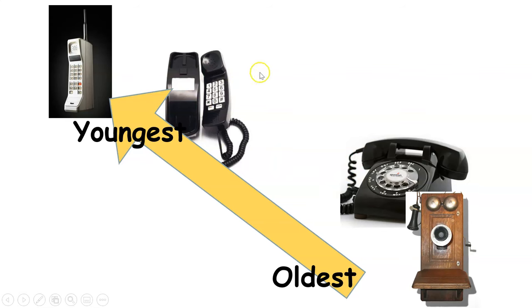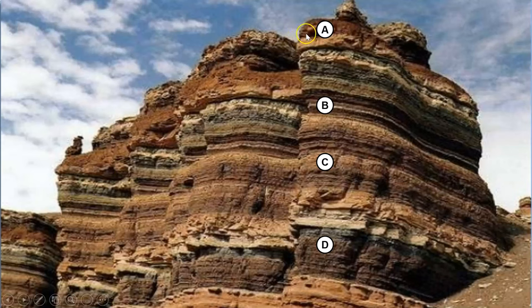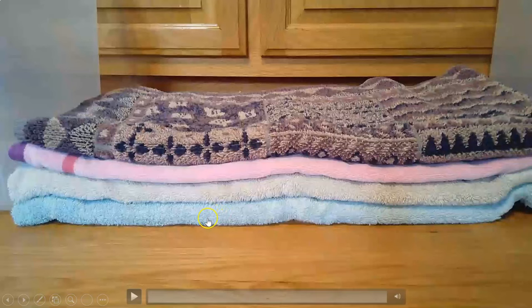There's no telling exactly how old the slimline princess phone or the rotary dial is — they were around for a really long time. But we definitely know the crank was around before the rotary dial, which was around before push buttons, which was definitely around before cell phones. Looking at sedimentary rocks in nice horizontal layers, the oldest would be layer D because it's furthest down, and the youngest would be layer A because it's at the top.